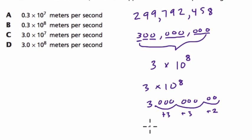If not, I'll just rewrite it. It's a three, followed by one, two, three, four, five, six, seven, eight zeros, which is 300 million, right?